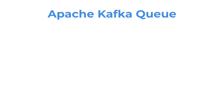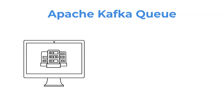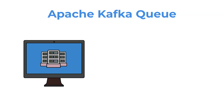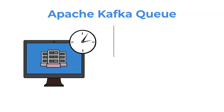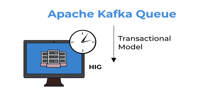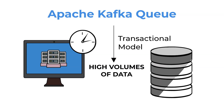Apache Kafka is an open-source platform for stream processing and distributed data management. It provides an API for programmatic integration, letting users process large streams of data in real-time. Kafka uses a transactional model that makes it well-suited for handling high volumes of data. The platform is also highly available and scalable, making it a popular choice for streaming big data applications.